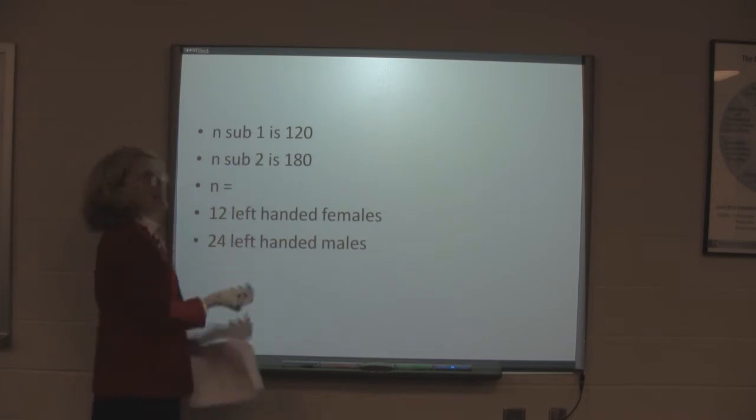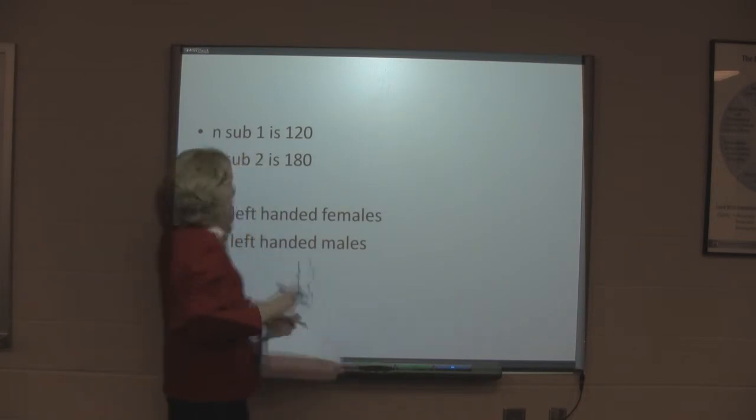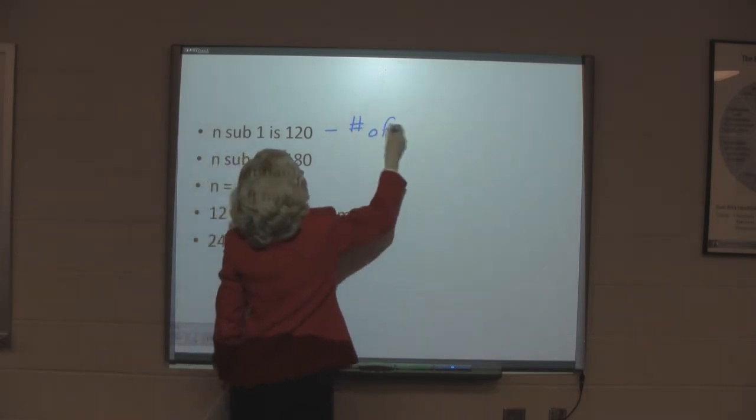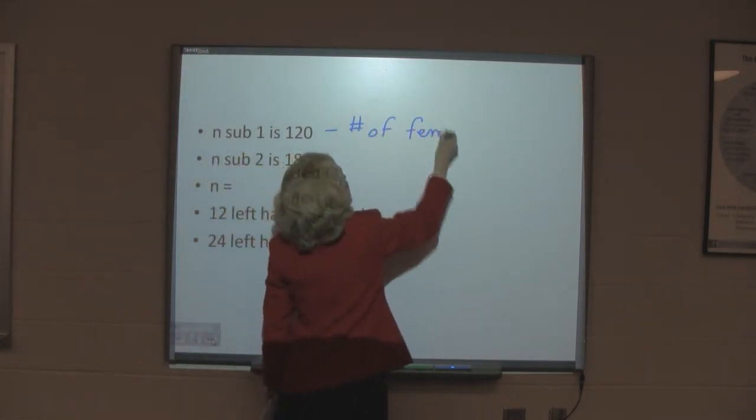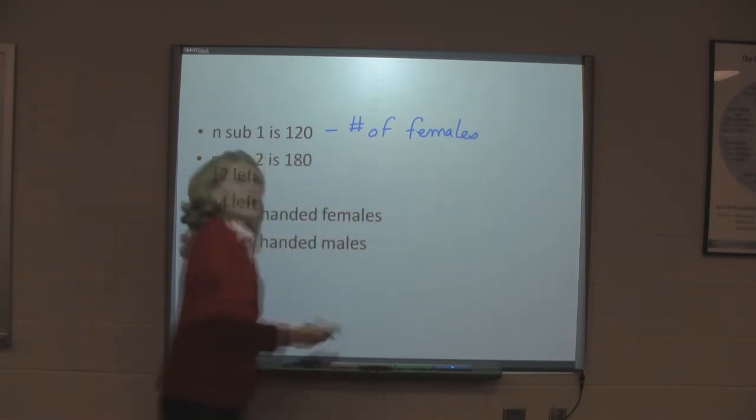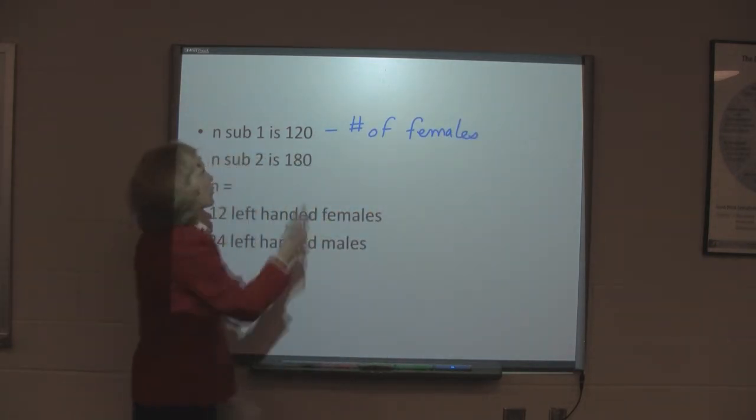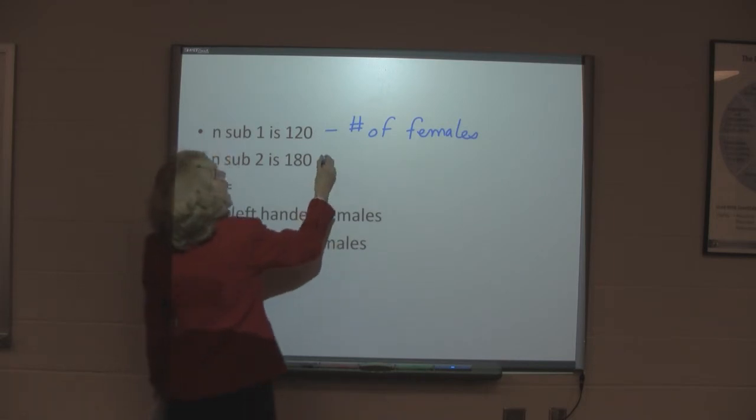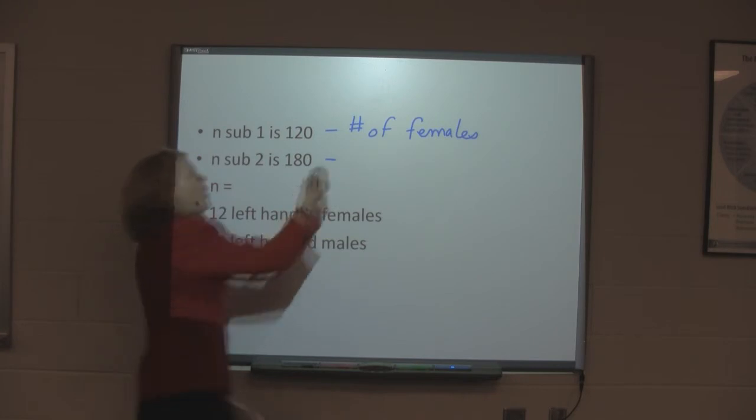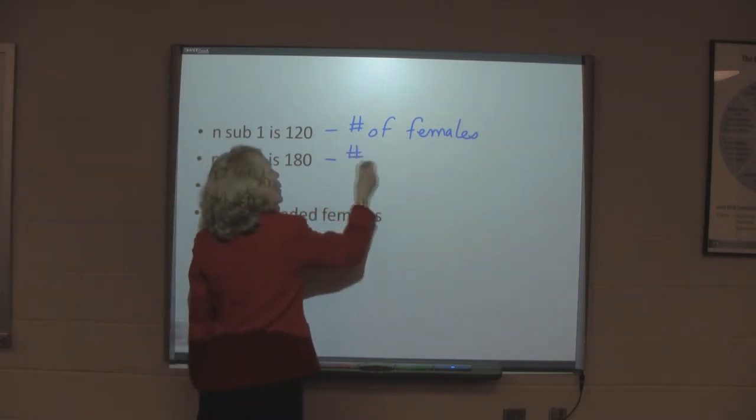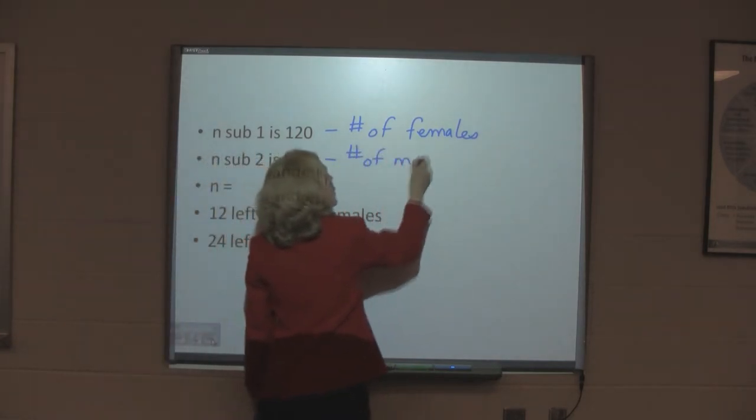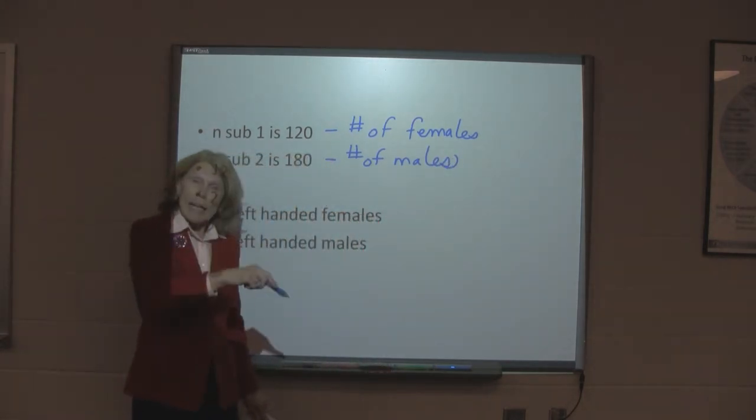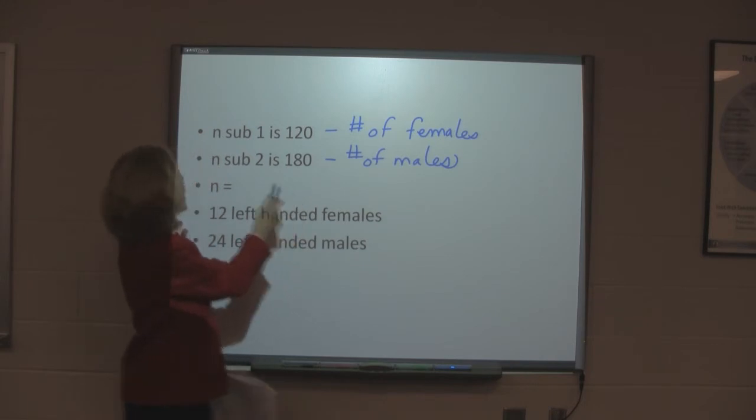Okay. So, let's say that n sub 1 is 120. And n sub 1 is the number of females, the number of females in our sample. So, that's going to be a column total, which we'll see in a second. And n sub 2 is the number of males in the sample. Again, the second column, the total will be 180.